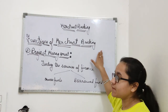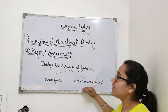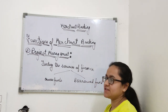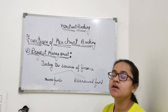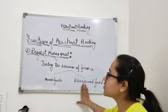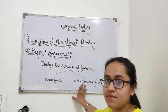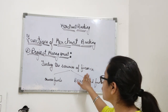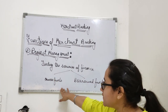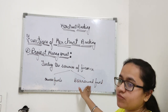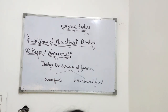The second function is project management. How do we manage a project? We start by finding the source of finance — whether it is an owner's fund or a borrowed fund. In a borrowed fund, we have debentures.